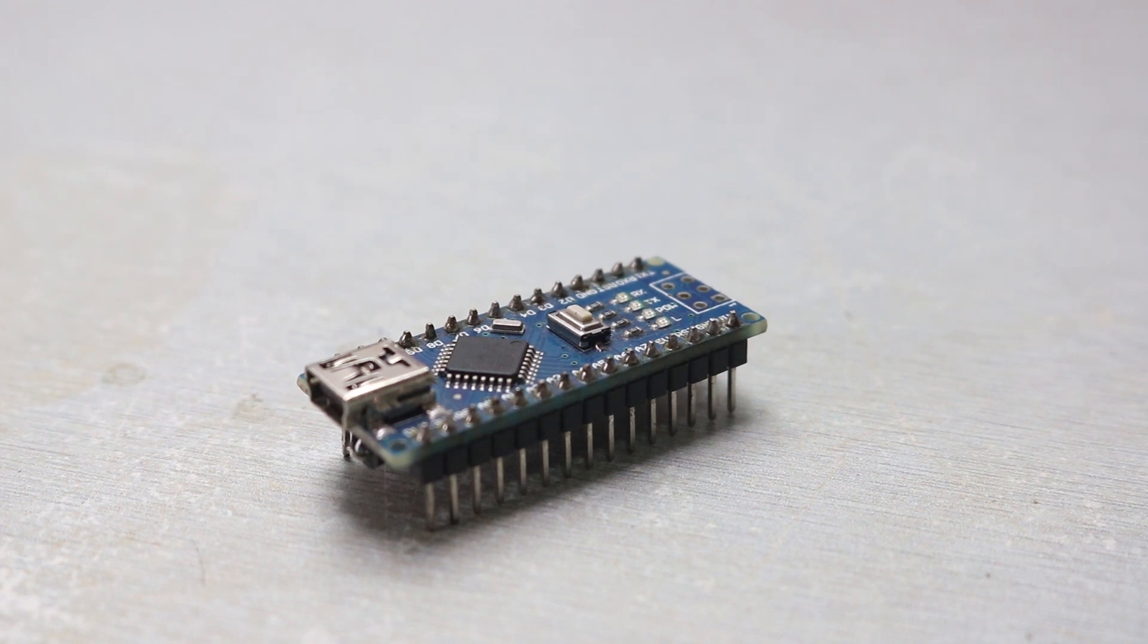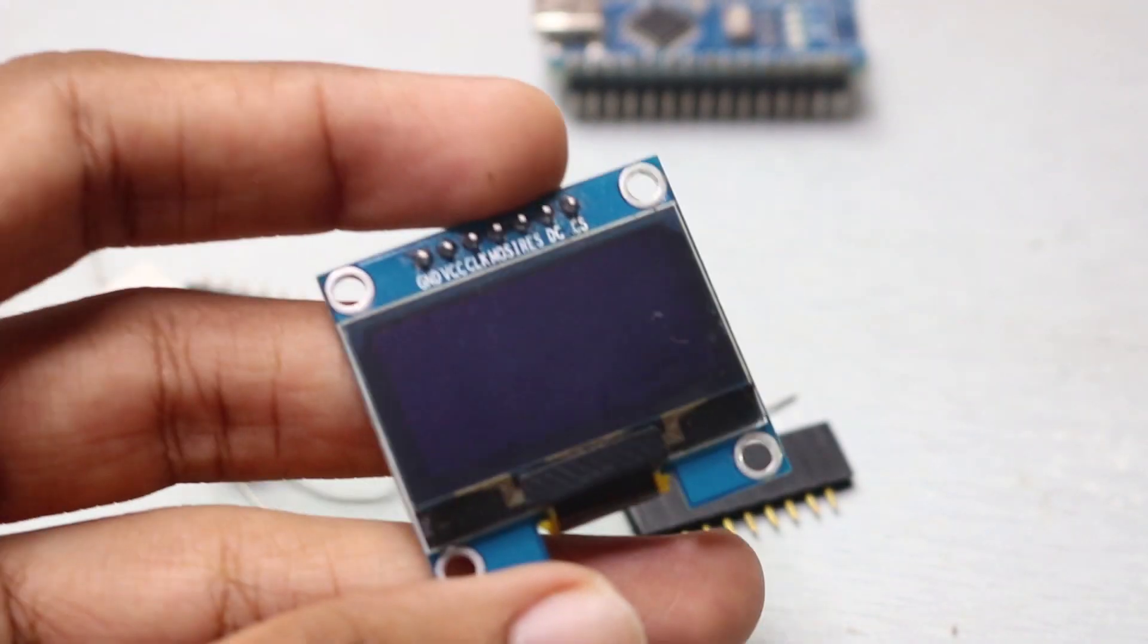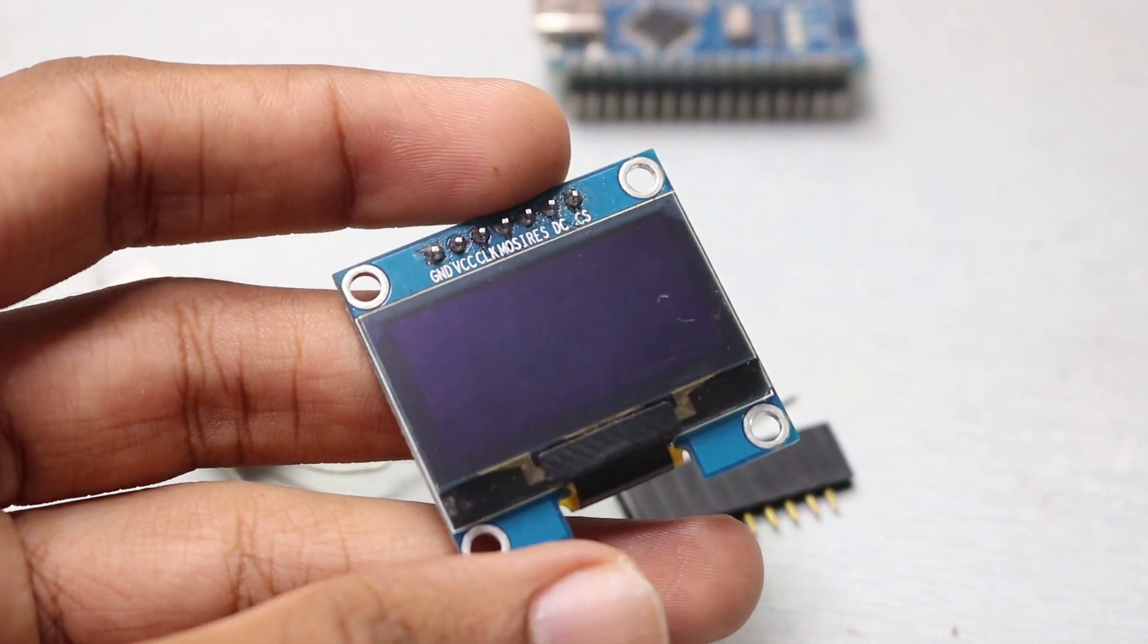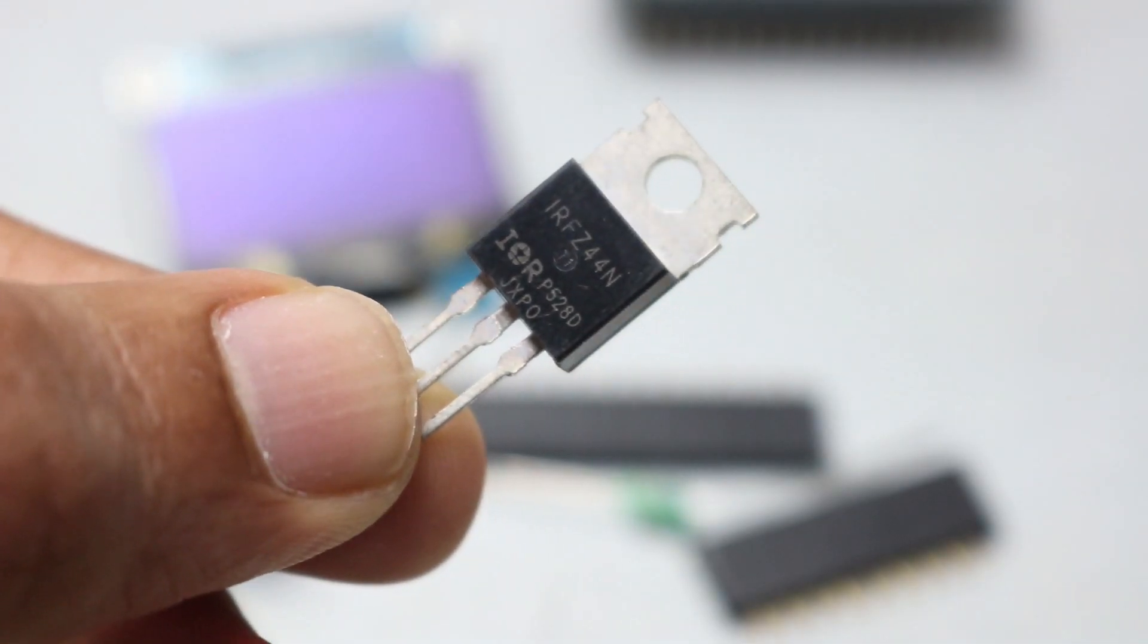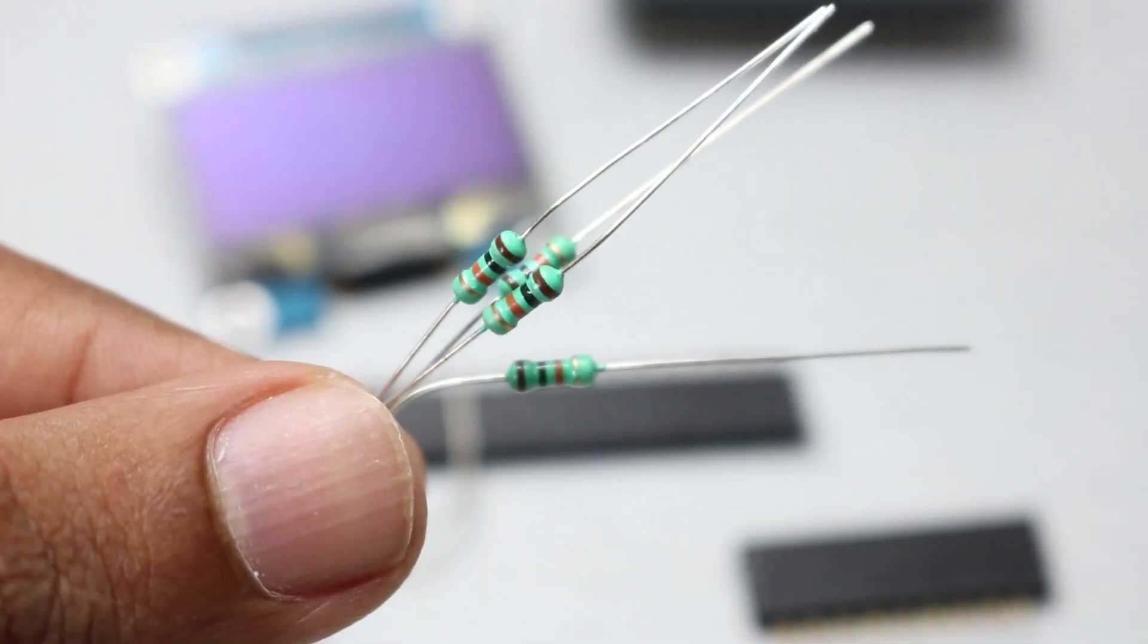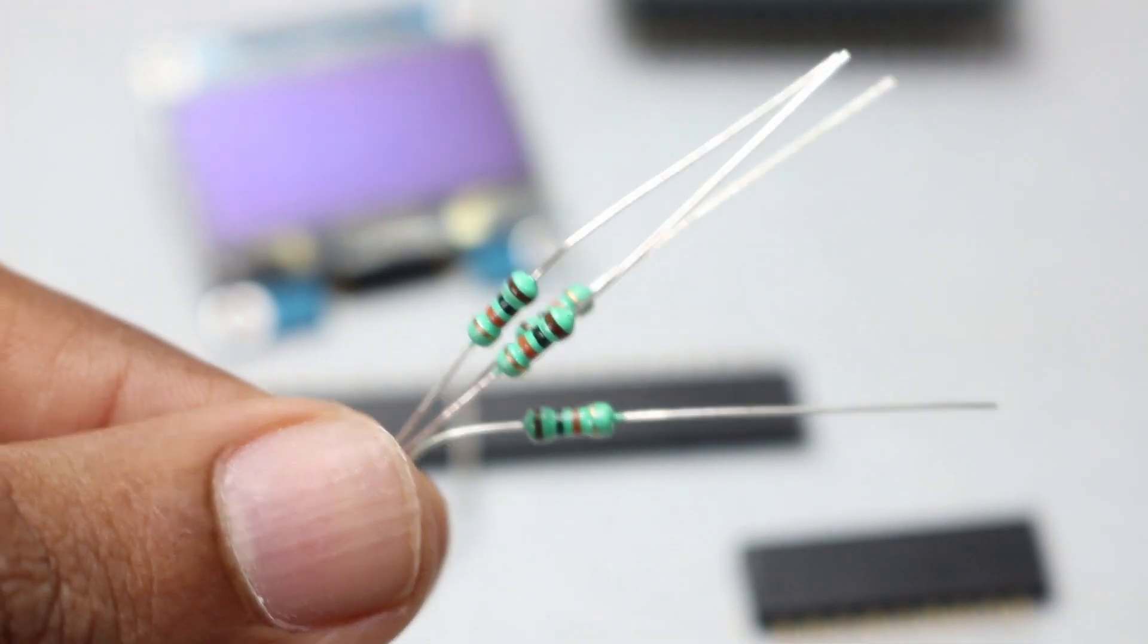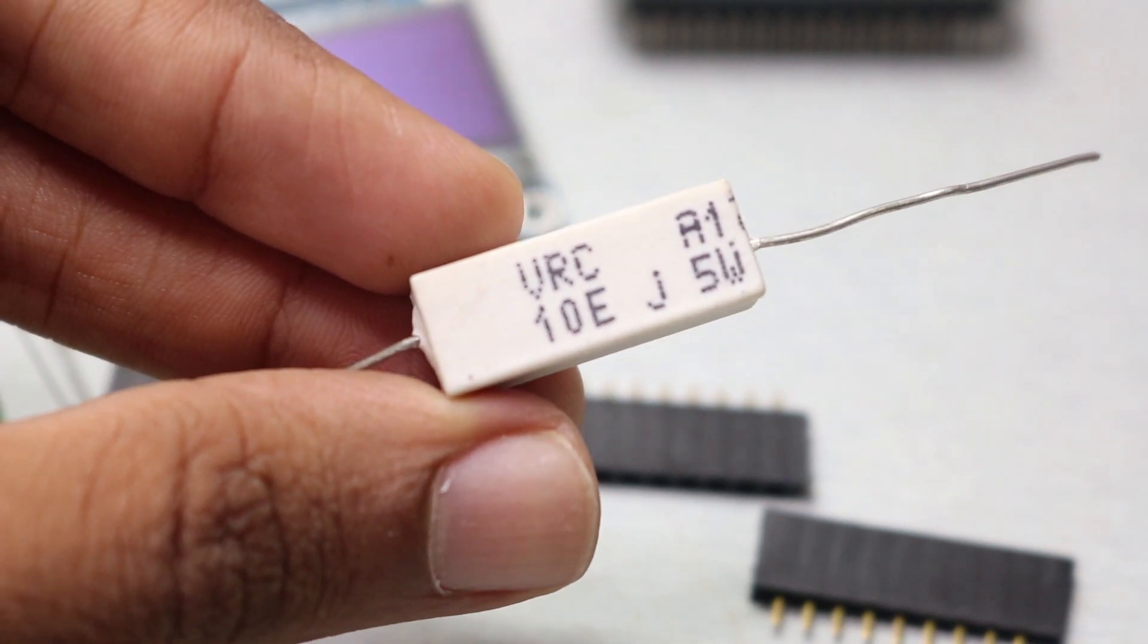The first thing we obviously need is an Arduino. Then to display the information we are going to use an OLED display, IRFZ44N N channel MOSFET, a couple of 10K resistor and a 10 ohm 5 watt power resistor.